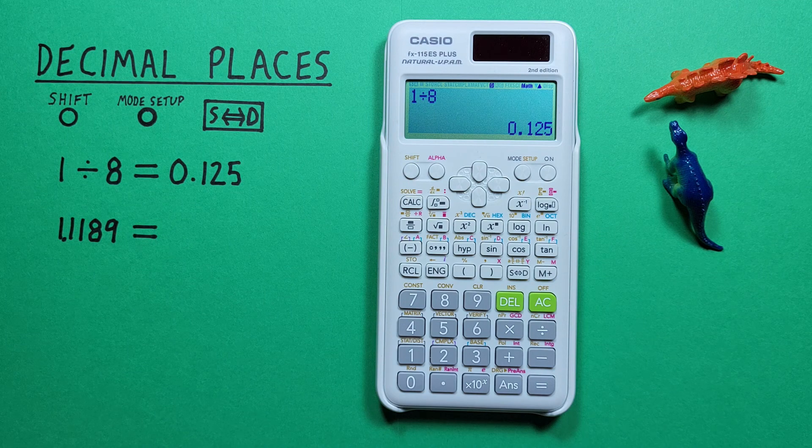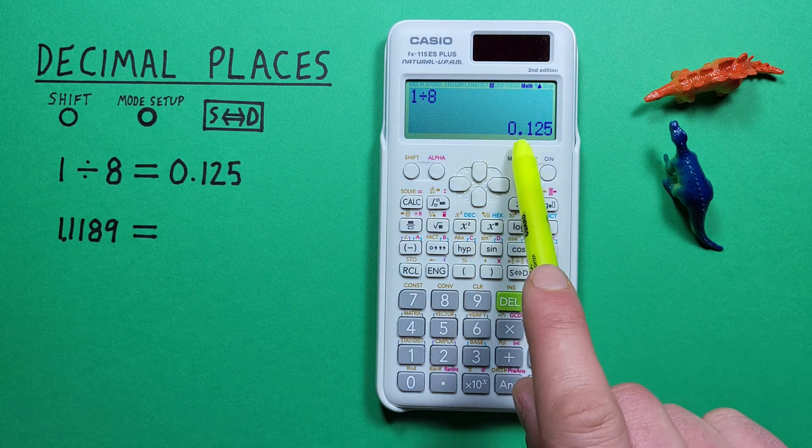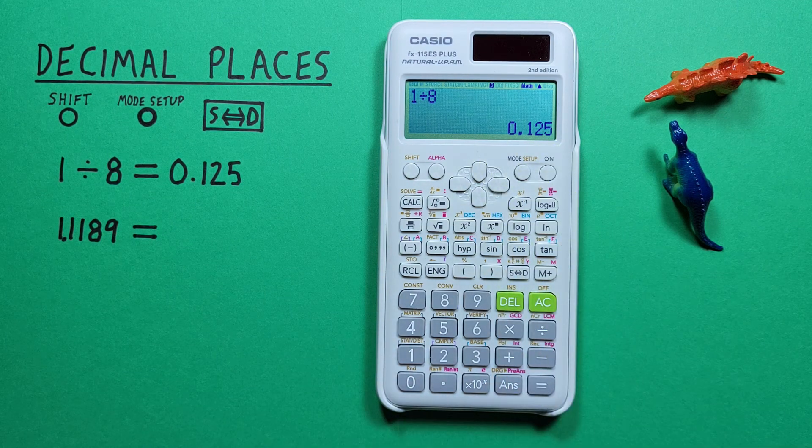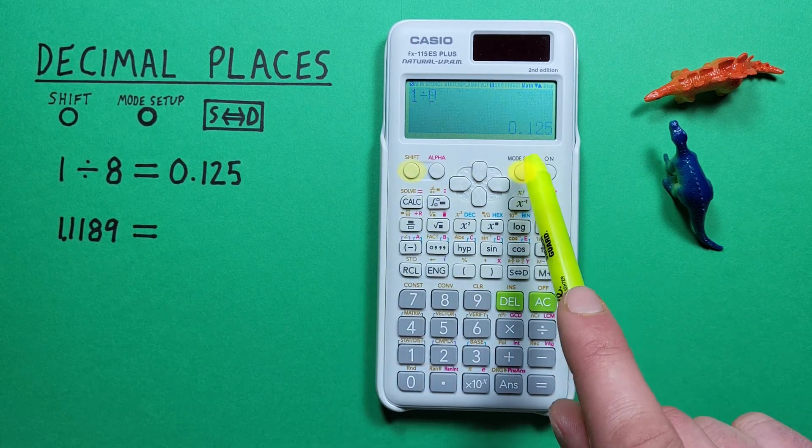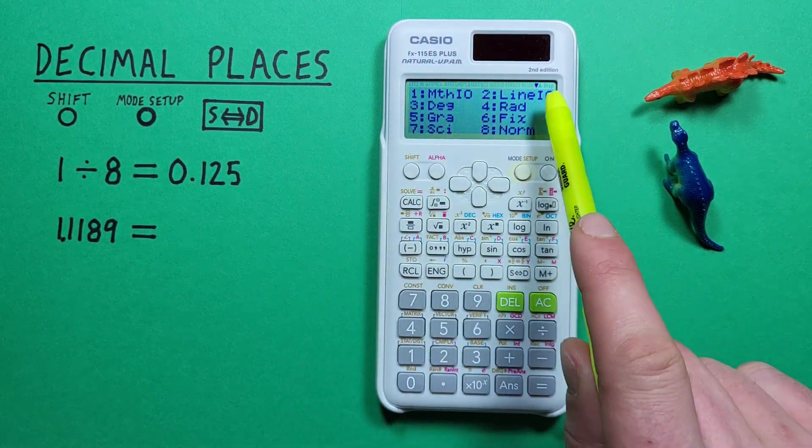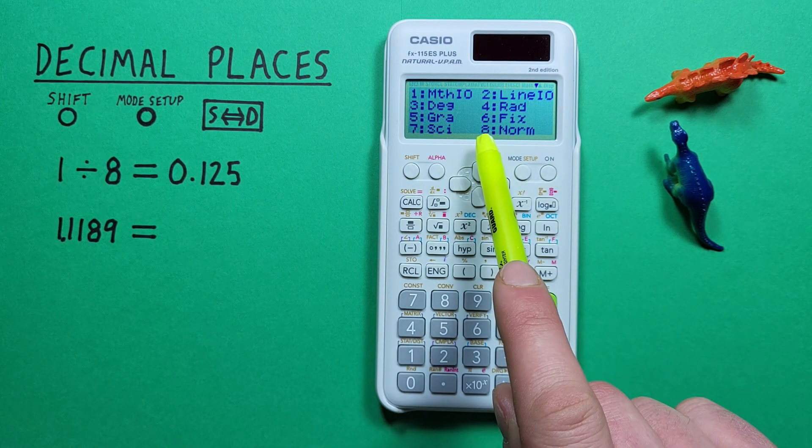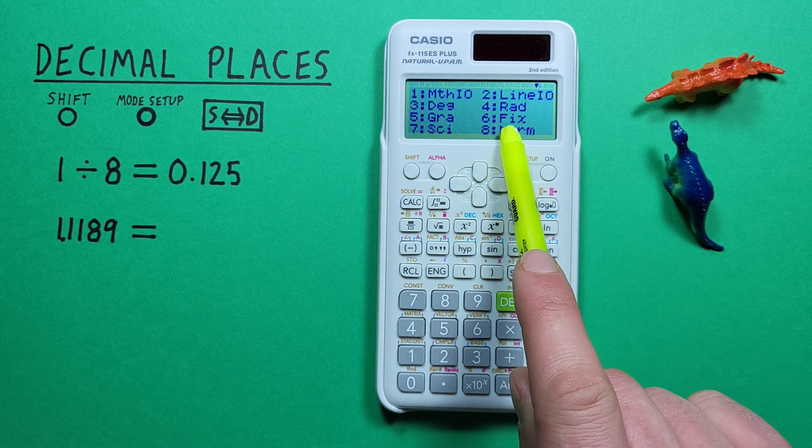But what if we wanted our result rounded to two decimal places? To do that we can press shift mode and that brings us to this menu here. Now we need to choose number 6 fix.